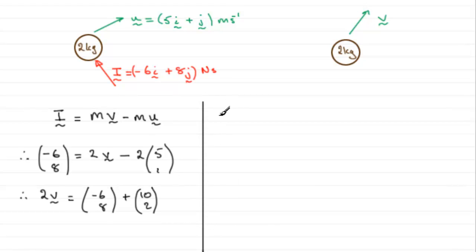Therefore, 2v equals -6 + 10, which is 4, and 8 + 2 is 10. We can divide by 2, and that gives us the velocity v as the vector (2, 5).